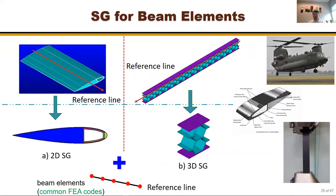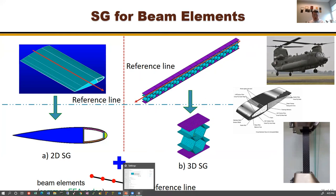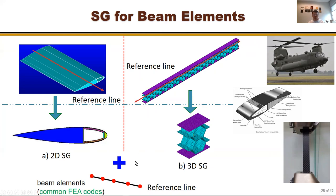For very long structures modeled as beam elements — for example, a rotor blade represented by a beam for flight dynamics simulation — if the beam can be approximated as having a uniform or piecewise uniform cross-section, the structure gene is the cross-section. If there's also heterogeneity along the length, you deal with a 3D block. The desired outputs are bending stiffness, torsion stiffness, shear stiffness, and others for beam analysis.